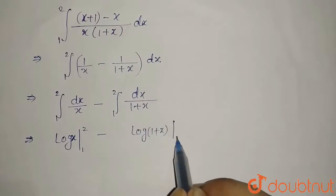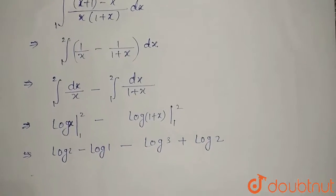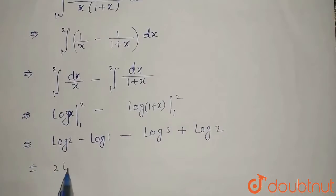From 1 to 2. That equals log 2 minus log 1 minus log 3 plus log 2. Log 2 plus log 2 will be 2 log 2.